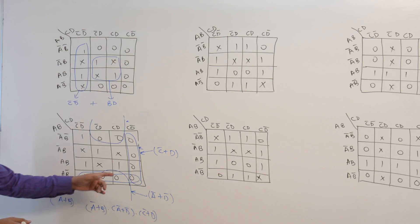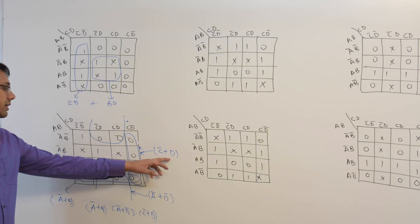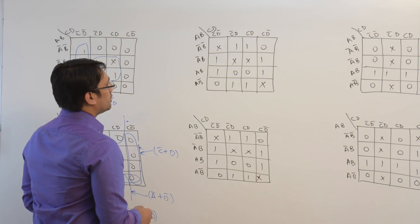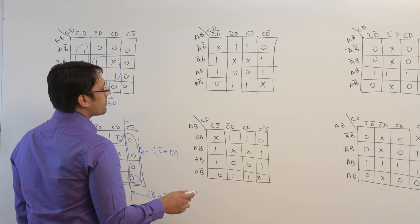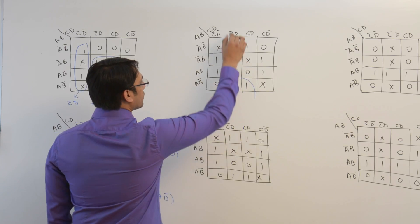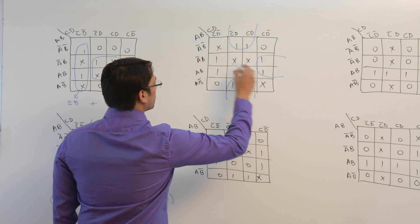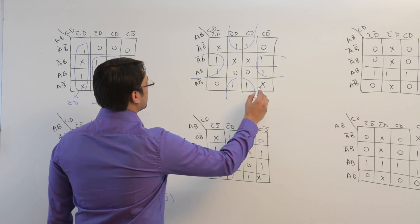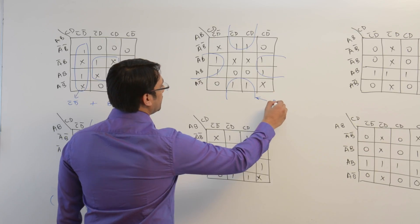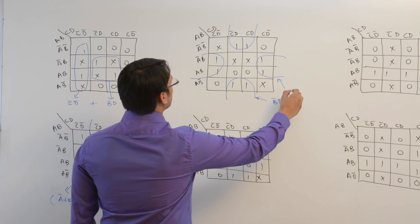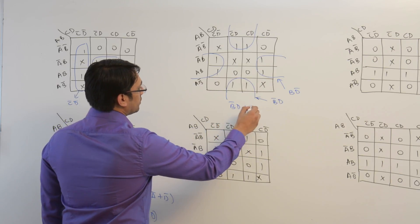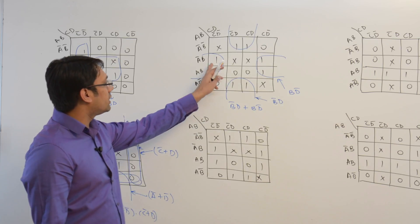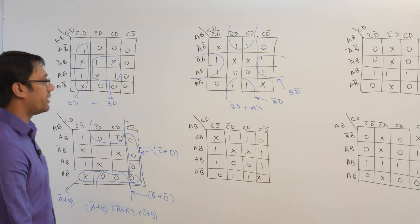Now in the third K-map, let us try to make the biggest subcubes for the 1s to find the SOP expression. We can make subcubes here, and there are basically two subcubes which are possible. This subcube is representing B complement D and this subcube is representing B D complement. Therefore, the solution equation will be B complement D plus B D complement. Here, I am not associating these don't care combinations because even if we include them, the subcubes will not give us a more minimized equation.